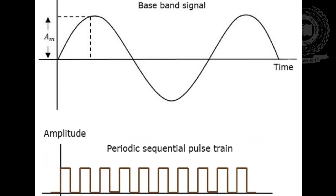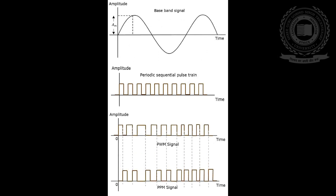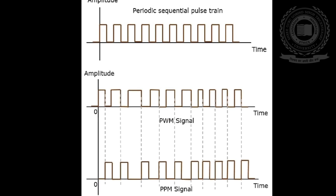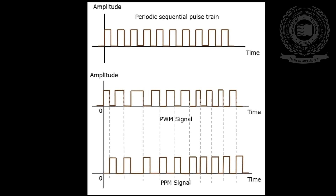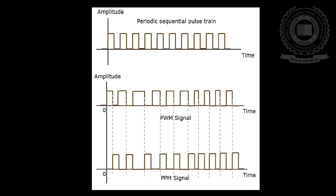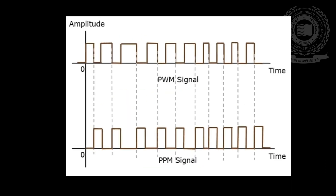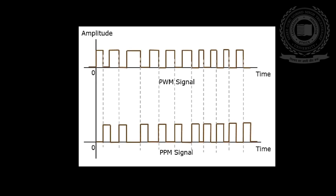Now let us discuss pulse position modulation. Pulse position modulation is an analog modulation scheme in which the amplitude and width of the pulses are kept constant, while the position of each pulse with reference to a reference pulse varies according to the instantaneous sampled value. The transmitter has to send synchronizing pulses to keep the transmitter and the receiver in sync. These sync pulses help maintain the position of the pulses. Pulse position modulation is done in accordance with the pulse width modulated signal, and each trailing edge of the PWM signal becomes the starting point for pulses in the PPM signal.